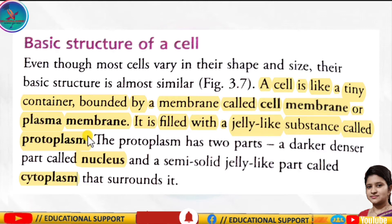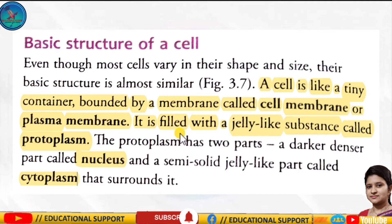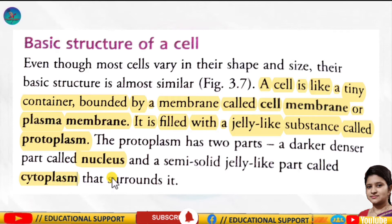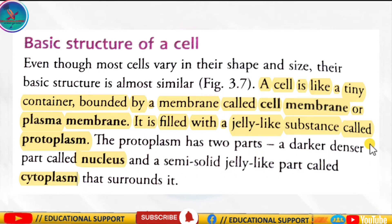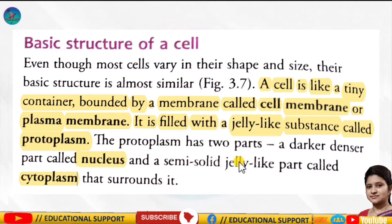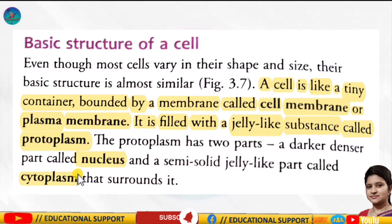The plasma membrane or cell membrane is filled with a jelly-like substance called protoplasm. The protoplasm has two parts: one is the nucleus — the darker, dense part — and the second is the cytoplasm, the semi-solid jelly-like part.